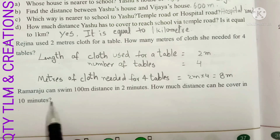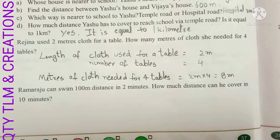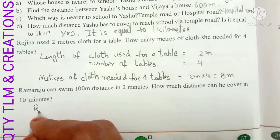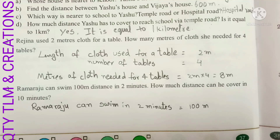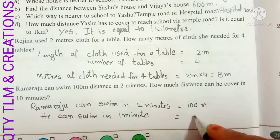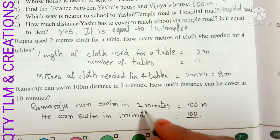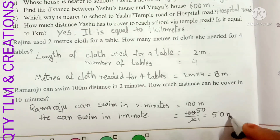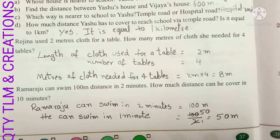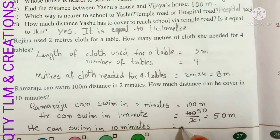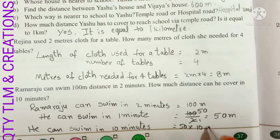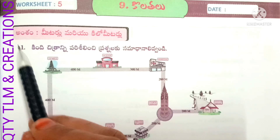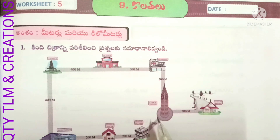Next question: Ram Raju can swim 100 meters in two minutes. How much distance can he cover in ten minutes? In two minutes he swims 100 meters, so in one minute he swims 100 divided by 2, which equals 50 meters. In ten minutes he can swim 50 into 10, which equals 500 meters.